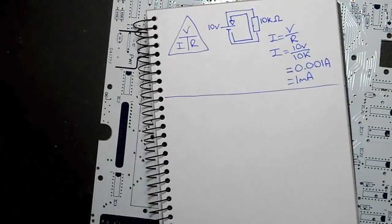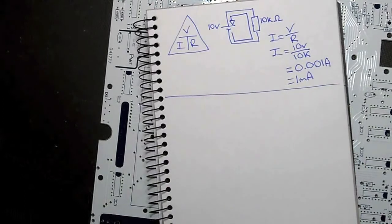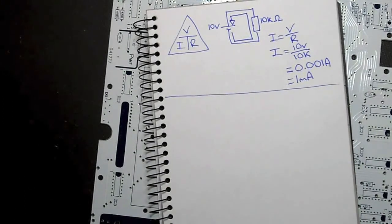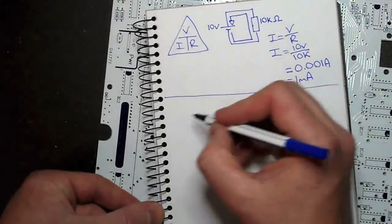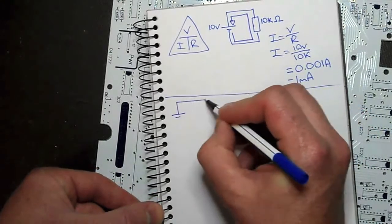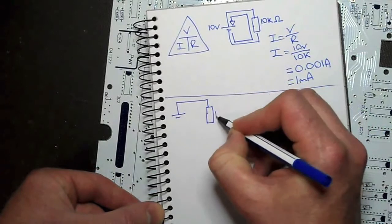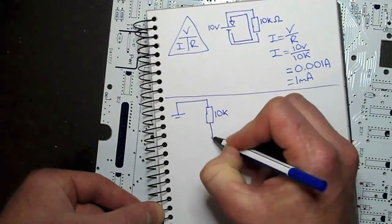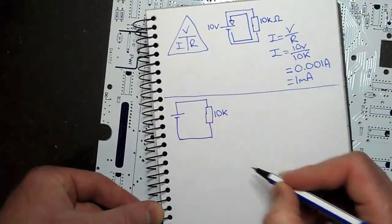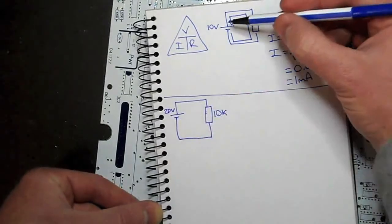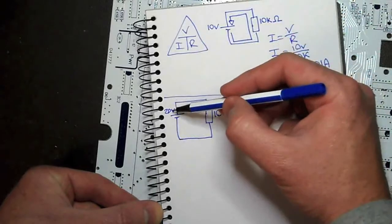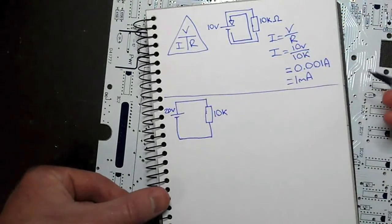I stated before that current is inversely proportional to resistance, and current is directly proportional to voltage. So let's try the voltage one first. Again, same circuit, same resistor value. Let's now increase the voltage to 20 volts. We've gone from 10, doubled it to 20. Current should also increase.